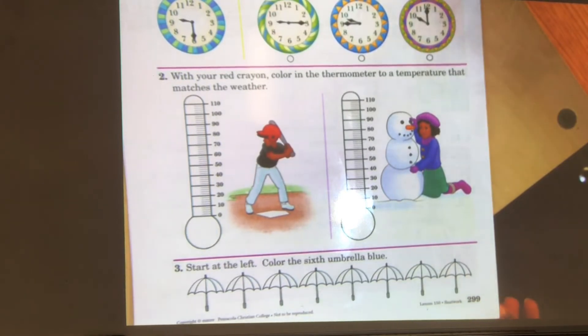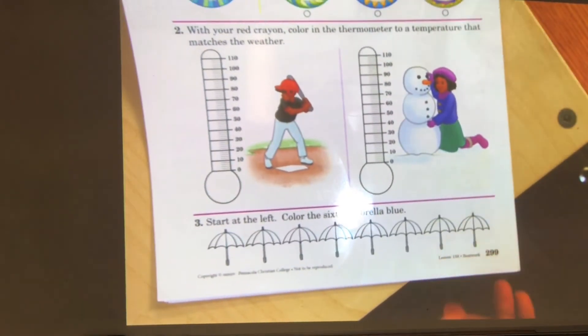Now, take a look at section three. Start at the left. Color the sixth umbrella blue. So, you need to start on the left and count the sixth umbrella. Once you reach the sixth umbrella, you color it blue.